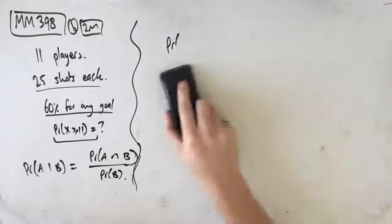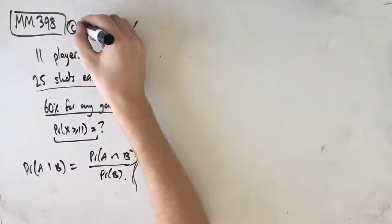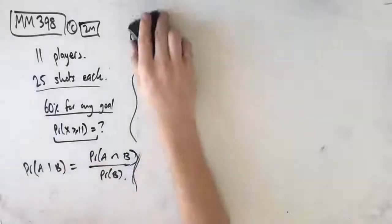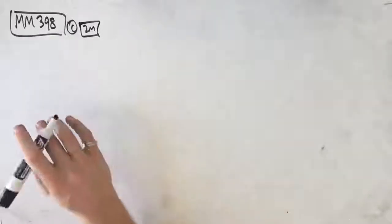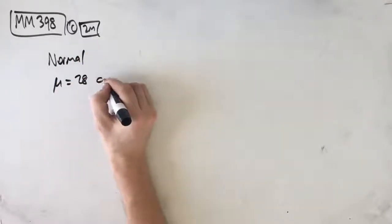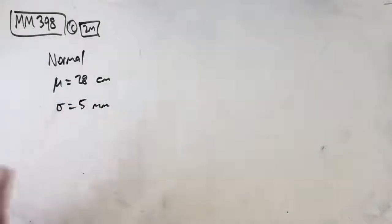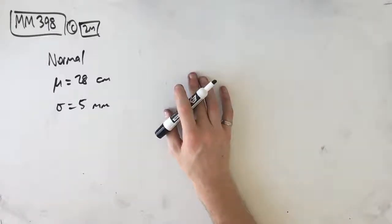Part C delves into normal distribution as opposed to binomial. Part C is a two-mark question. It says this team uses many soccer balls because they get worn out over time, and they only use balls from one particular brand. A ball's diameter is a normally distributed random variable with a mean of 28 centimetres and standard deviation 5 millimetres. Part C asks: for any given ball, find the probability that it has a diameter greater than 28.8 centimetres, correct to four decimal places.